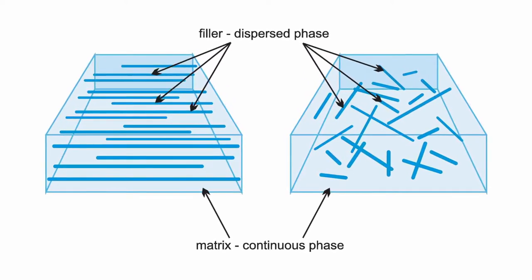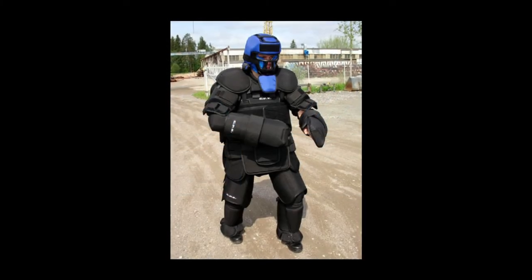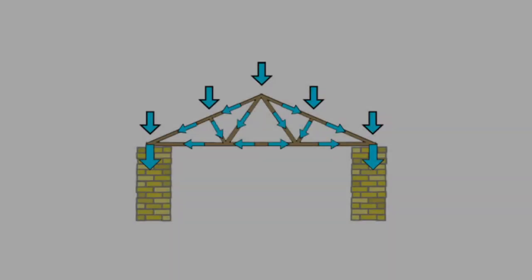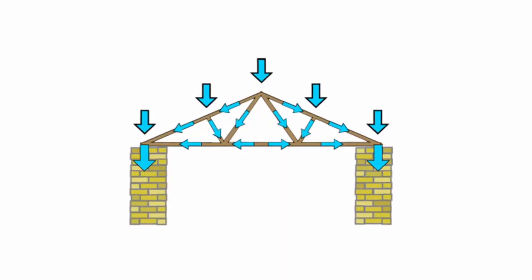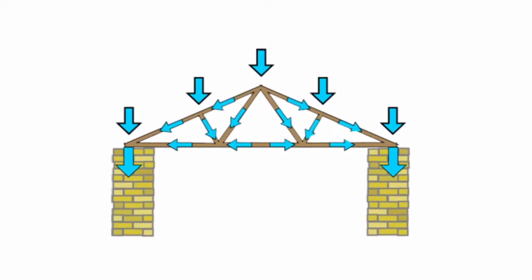By surrounding and adhering to the reinforcements, the matrix serves to protect the reinforcements from the environment and also transfer any imposed loads onto the fibers. The matrix is generally weaker than the reinforcements, so being able to dump the load into the reinforcements is critical to performance.